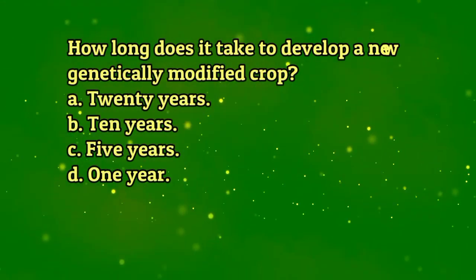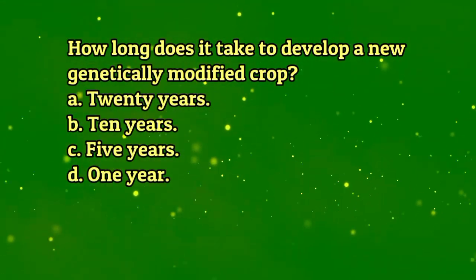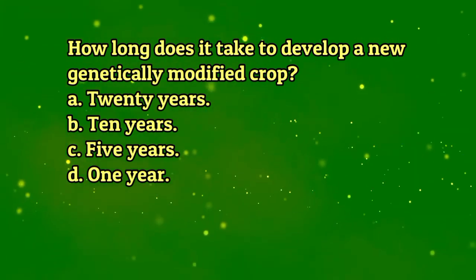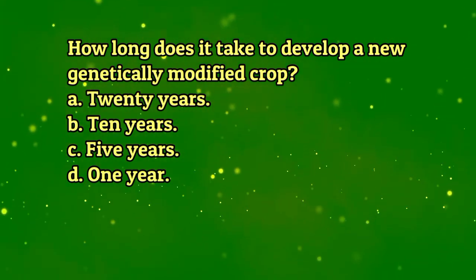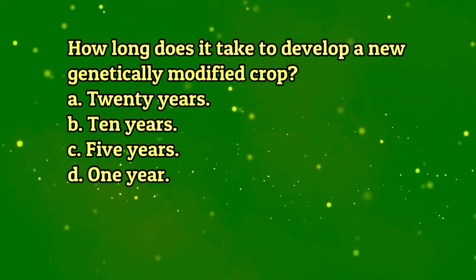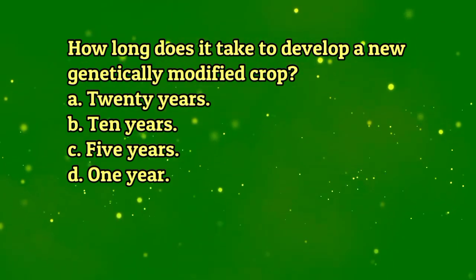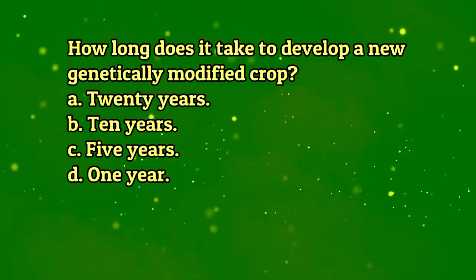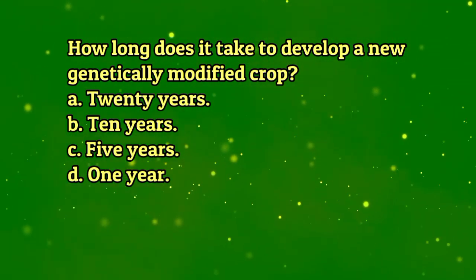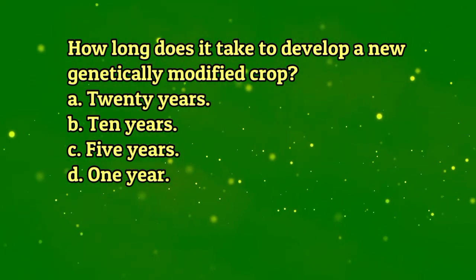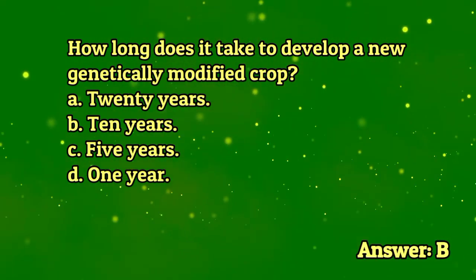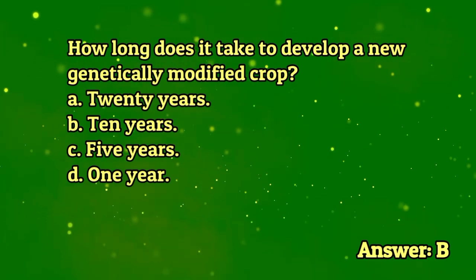How long does it take to develop a new genetically modified crop? A. 20 years. B. 10 years. C. 5 years. D. 1 year. The answer is letter B.